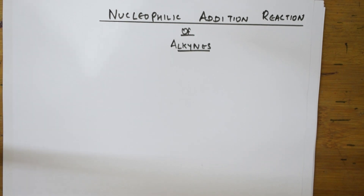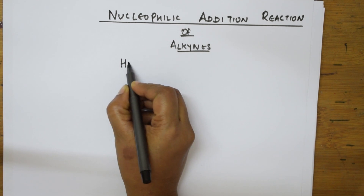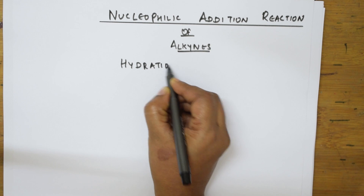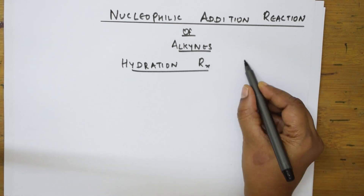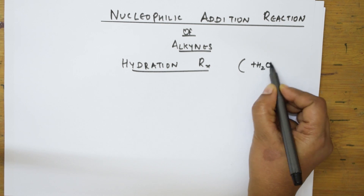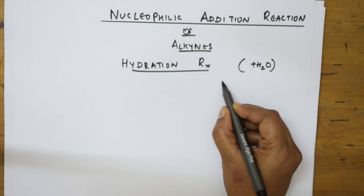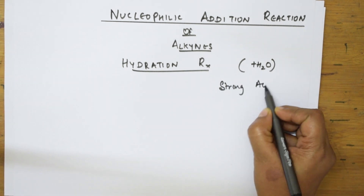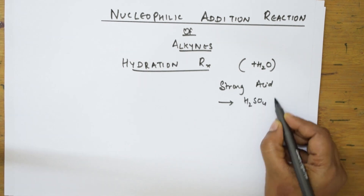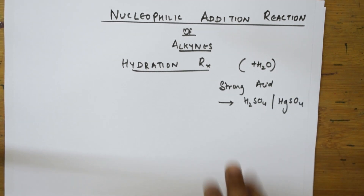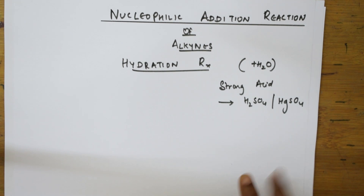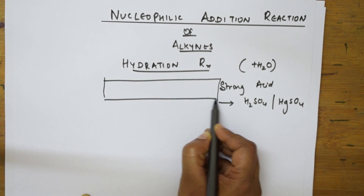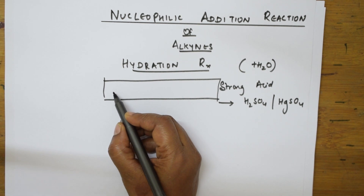Students, let us start with the first reaction: nucleophilic addition reactions of alkynes. As mentioned in the index, we are going to see the hydration of alkynes. Hydration is nothing but adding a water molecule. This happens in the presence of strong acids — sulphuric acid or mercuric sulphate. In this type of reaction, we are going to learn a concept called keto-enol tautomerism or enol-keto tautomerism.